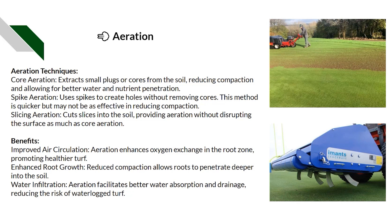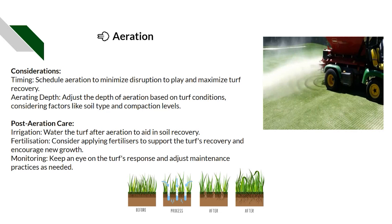Considerations for aeration include the impact on play, avoiding aerating when it's too wet, and choosing the right aeration depth depending on what you're trying to achieve — whether softening the top layer or fracturing compacted layers six to seven inches down. Post-aeration care includes irrigation, fertilizing, monitoring the turf, and top dressing to get sand into the holes made in the surface. The result over time is a thicker sward, better root growth reaching deeper for nutrients and water, and improved overall soil structure.